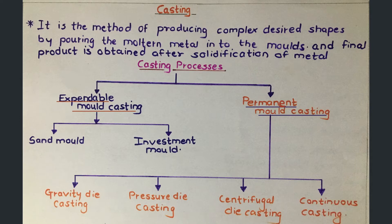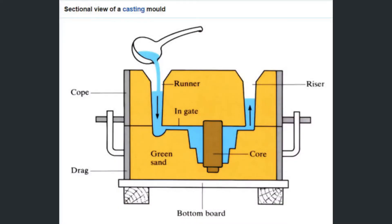The first type of expandable mold casting is sand casting, which is the most widely used process. The molds are prepared using sand and can be used to produce a large variety of complex parts. This is the cheapest casting process among all casting processes.